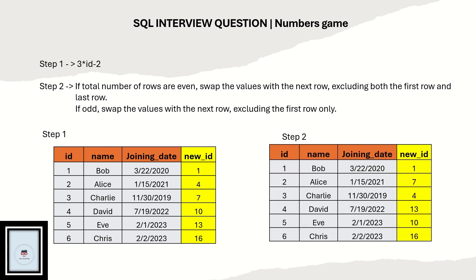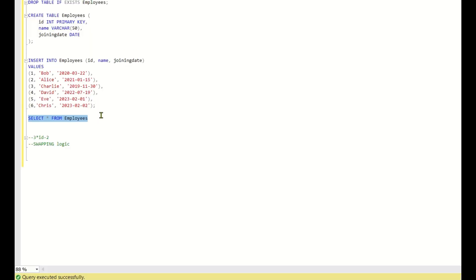For step two, the swapping logic is applied. Since the row count is even (6), we exclude the first and last rows. Row 2 (new id = 4) and row 3 (new id = 7) are swapped, becoming 7 and 4. Row 4 (10) and row 5 (13) become 13 and 10. Row 1 and row 6 remain as 1 and 16.